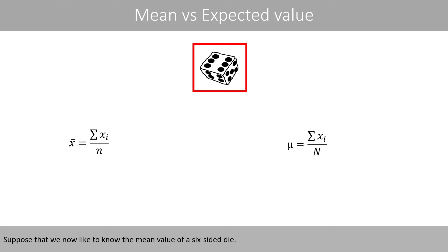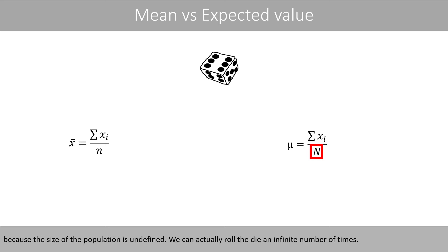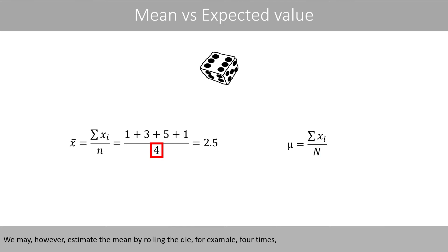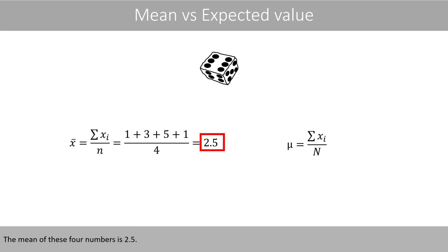Suppose that we now like to know the mean value of a six-sided die. The problem is that this equation no longer works, because the size of the population is undefined — we can actually roll the die an infinite number of times. We may, however, estimate the mean by rolling the die, for example, four times, where we happen to get these four numbers. The mean of these four numbers is 2.5.